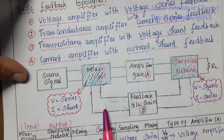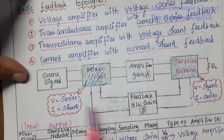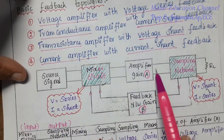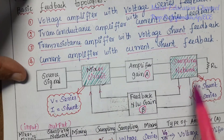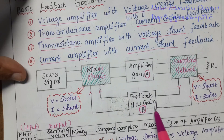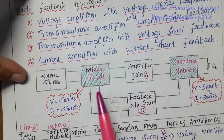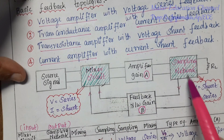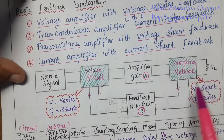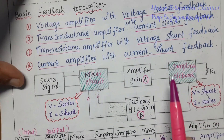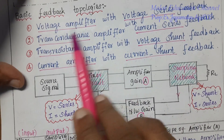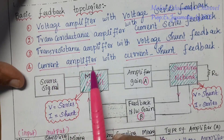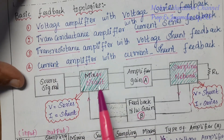This is the functional block diagram of the feedback amplifier. It has a source signal, mixer circuit, amplifier, sampling network, and feedback network. The combination of the mixer circuit at the input and the sampling network at the output decides the type of topology - whether it is a voltage amplifier, transconductance, transresistance, or current amplifier.